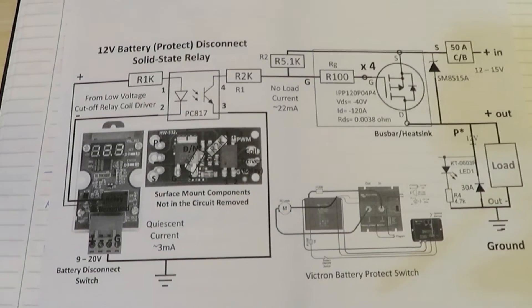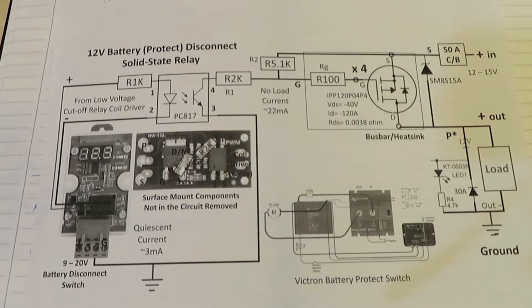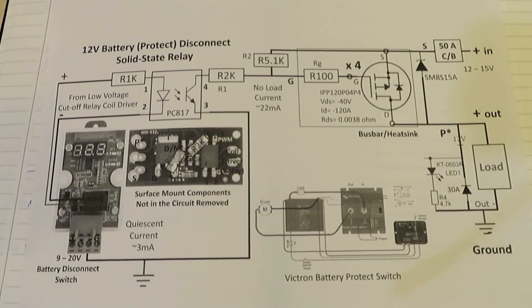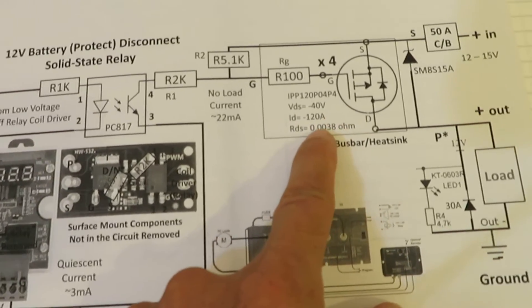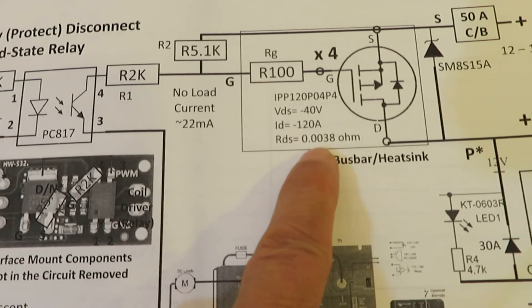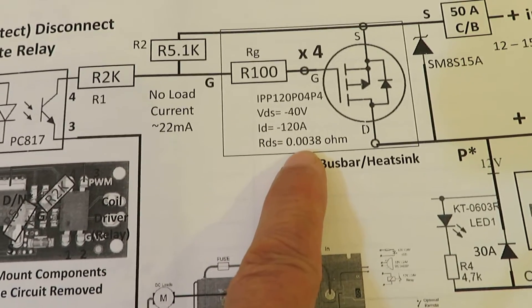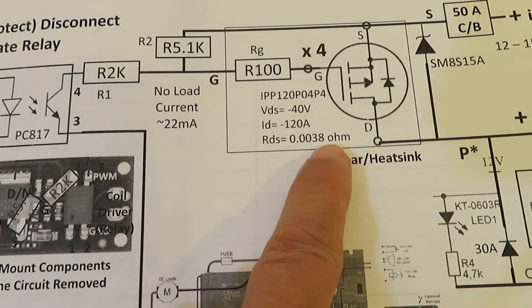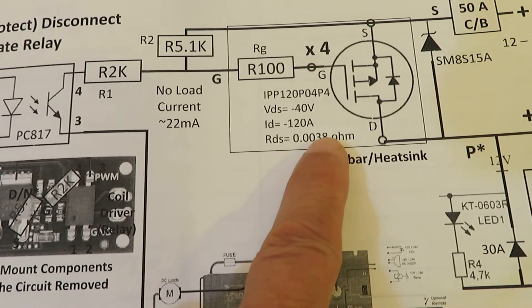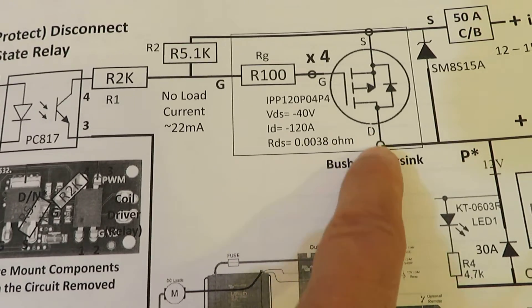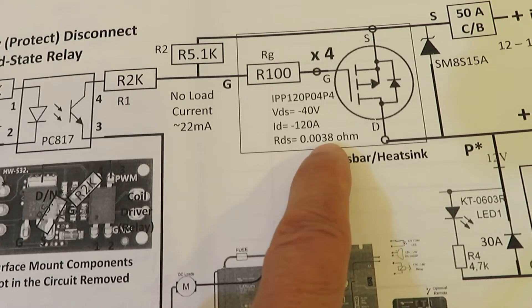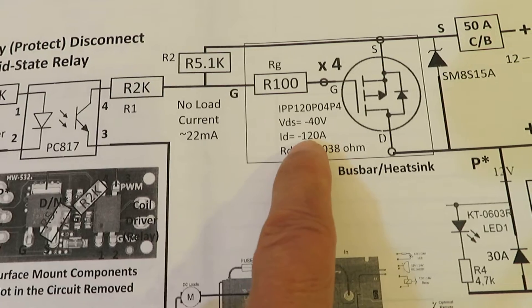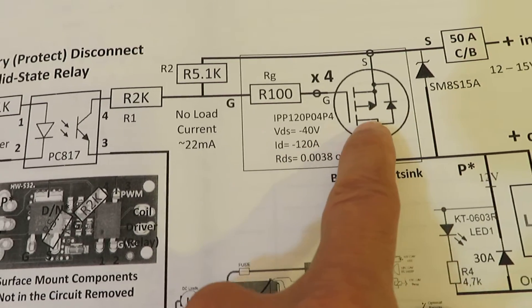This is what the circuit diagram looks like. And this is a p-channel MOSFET design. And this is a very nice MOSFET because most of the p-channel MOSFET has very high internal resistance between the drain and the source. And this one is only 3.8 milliohm and good for 120 amps one of them.